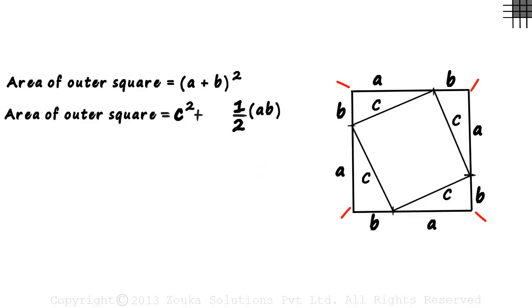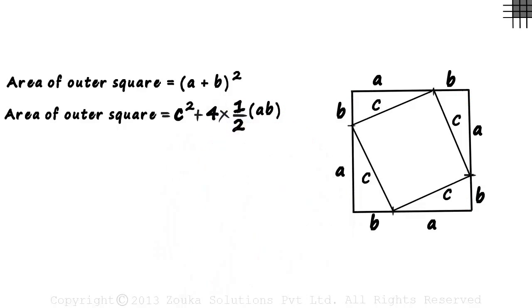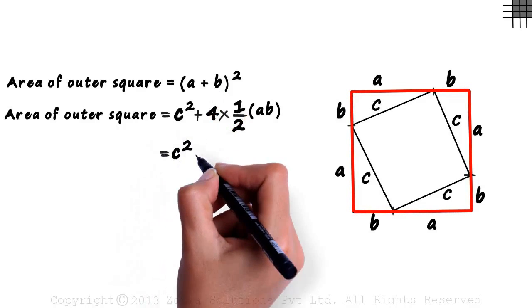To include the area of four triangles, we just multiply this with four. Their total area would be four multiplied by half AB. Two times two is four and we get the area of the outer square as C squared plus 2AB.